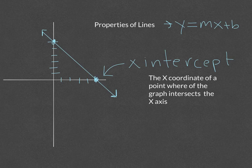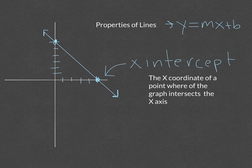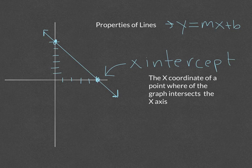The x-intercept is the x-coordinate of a point where the graph intersects the x-axis. So the x-intercept is just where you're crossing the x-axis.